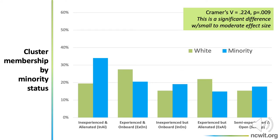Let's look at it by minority status. We do see a significant difference in cluster membership by minority status. But again, what does this statistical difference really mean? We see a large percentage of both white and minority students in the inexperienced and alienated group and in the experienced and on-board groups — there are white students and minority students in all of these groups.